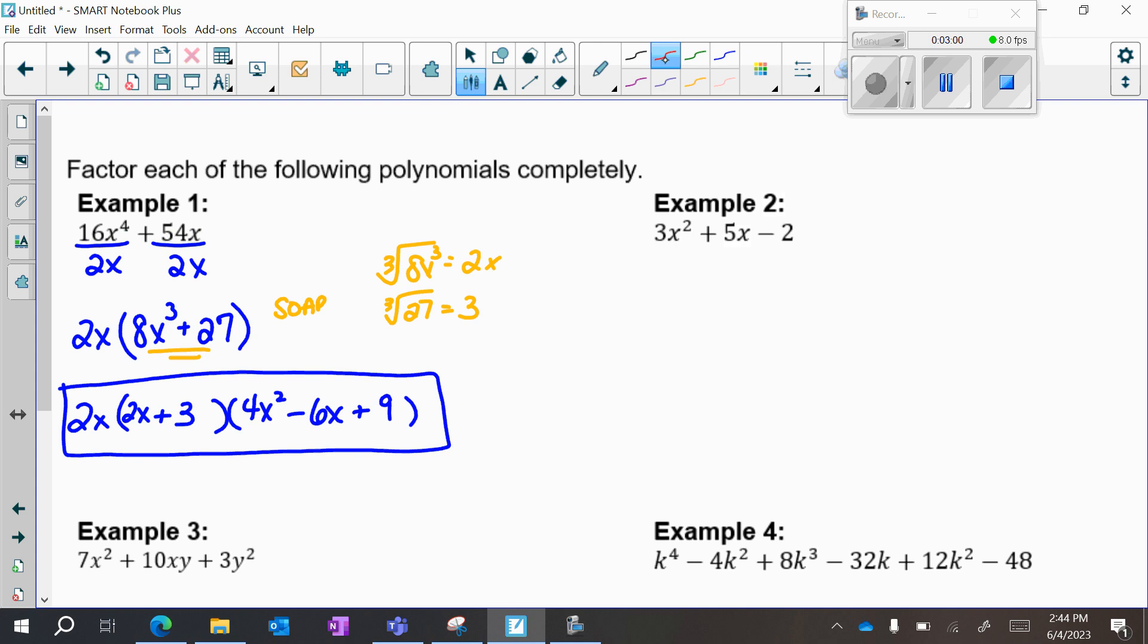Example 2. There's no GCF, and there's a trinomial, which means it has three terms. There's a number in front, a coefficient in front of the x squared, so I'm going to do a times c. So 3 times 2 is 6, so I'm now going to multiply to 6, so either I'm going to use 1 and 6 or 2 and 3.